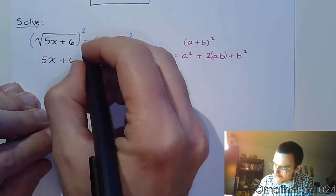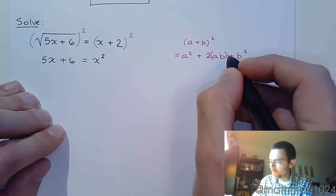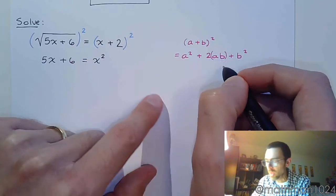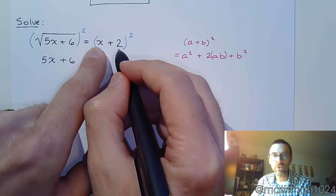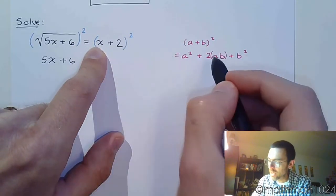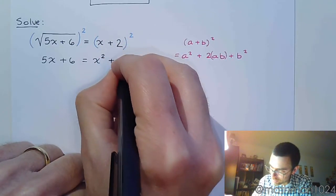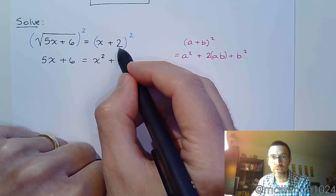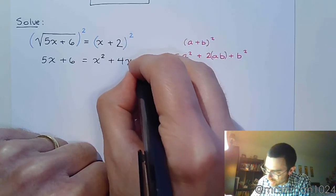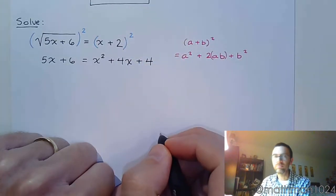So when I square the x, I get x squared. This 2ab, if I multiply x times 2, I get 2x. And then times that 2 is going to give me a 4x in the middle. And then I square the 2 because that's my b. And I get 4, like that.